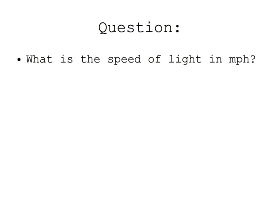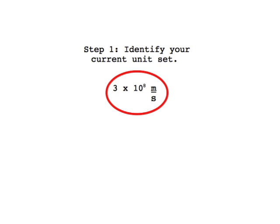What is the speed of light in miles per hour? Step 1: Identify your current unit set. In this case, we will use the conventional speed of light measurement, which is 3 times 10 to the eighth meters per second.